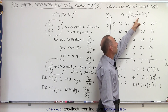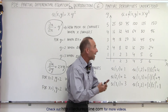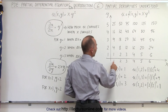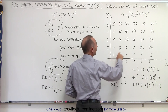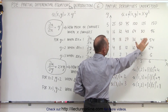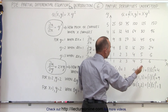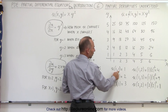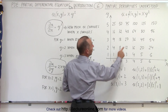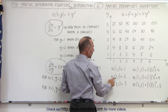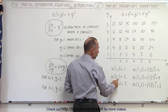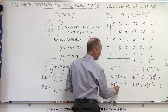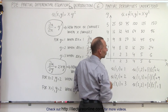That function is defined by x times y squared, so u is equal to x times y squared. On the xy-plane, if we have certain values for x and certain values for y, we can use the definition of our function to find its values for various combinations. For example, when x equals 1 and y equals 1, u equals 1 times 1 squared, which is 1. When x equals 2 and y equals 1, u equals 2. And when x equals 3 and y equals 1, u equals 3.